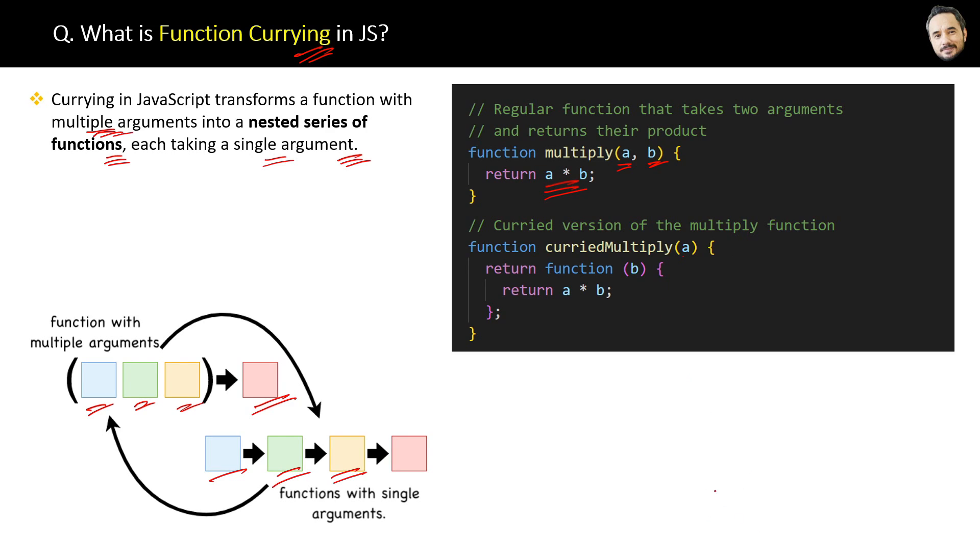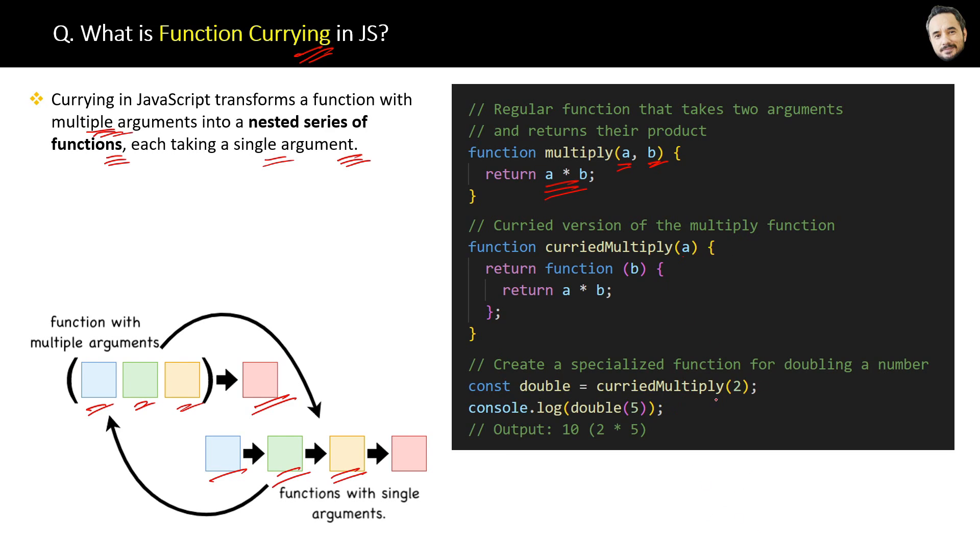How to call this? First we will call the outer function curried multiply with one argument like this and get the result function in a variable. Then we will call the variable like a function and pass the argument as the parameter.